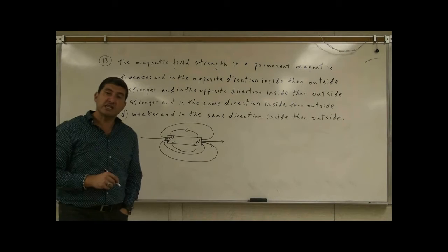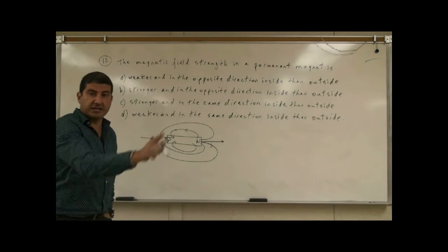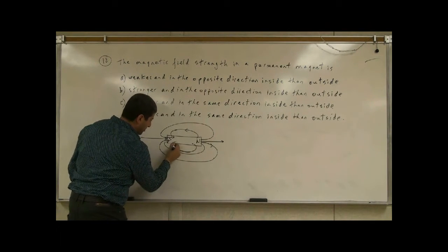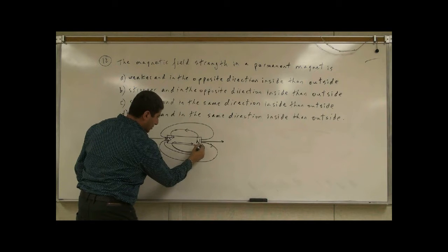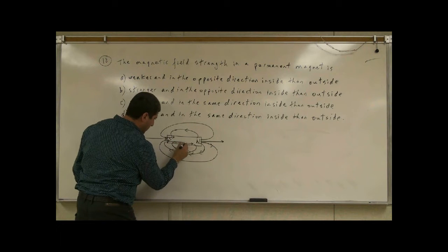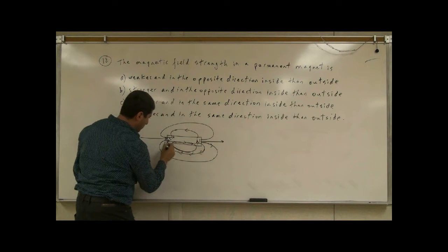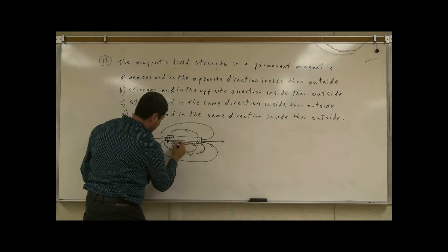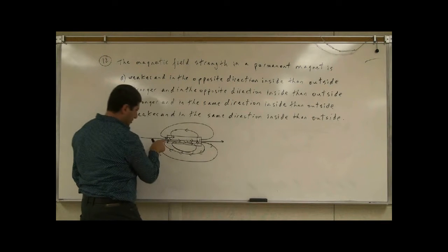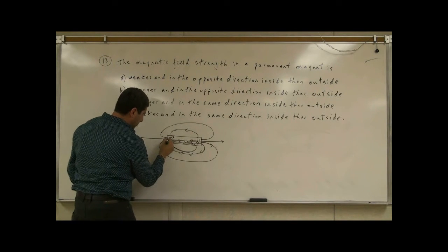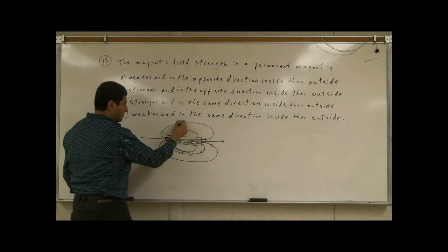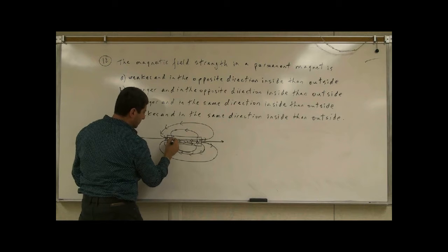What happens to the magnetic field lines inside? They basically make a complete circle. Whatever is going out comes back in, then goes straight back through the interior. Everything is coming out, making a complete circle, and winding back inside like that.